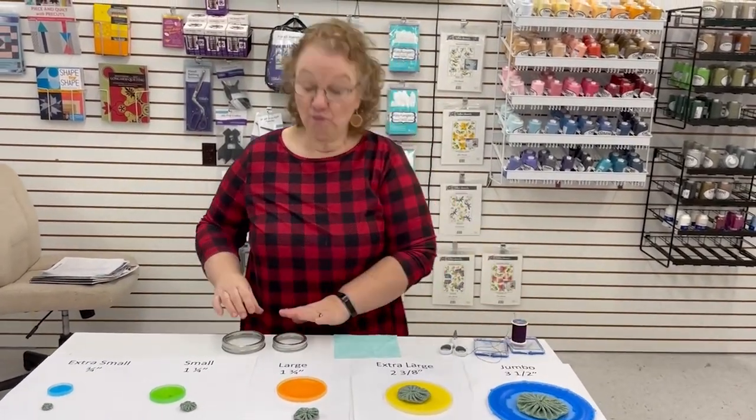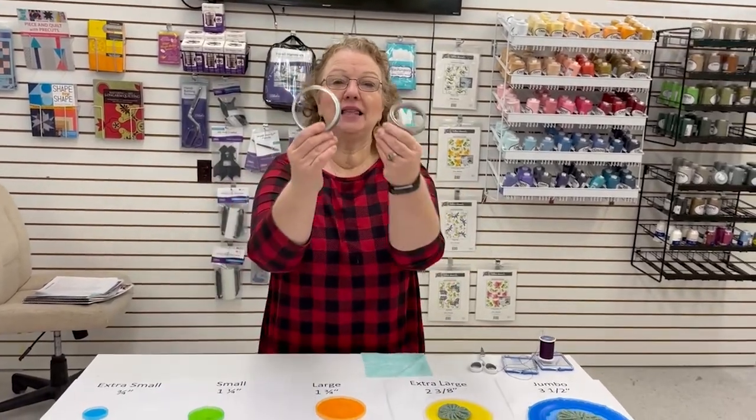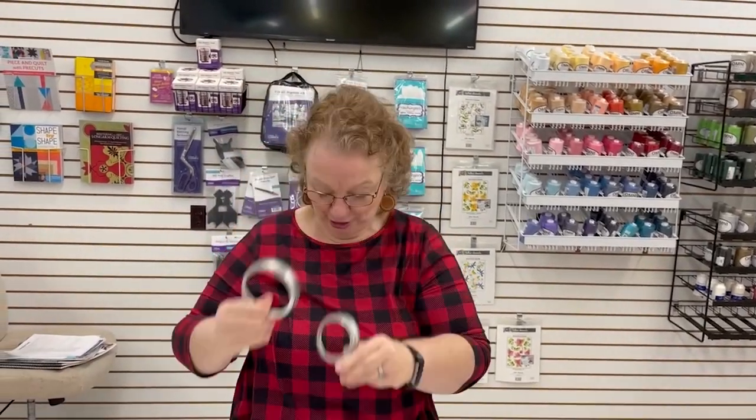Now, when we were little and used to make our yo-yos, these were our yo-yo makers. They came in two different sizes, wide mouth and regular. And when you did it, you had to make sure and turn under a hem. You had to try to get your stitches all evenly across. And you hoped when you made your second one that it turned out the same size as your first one.